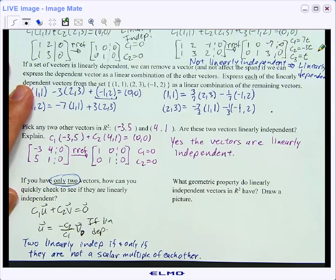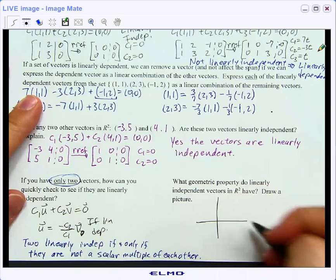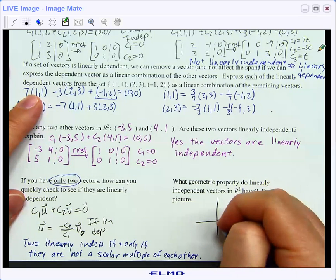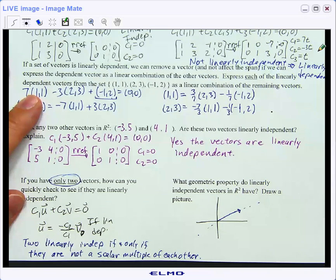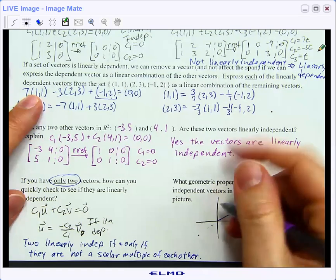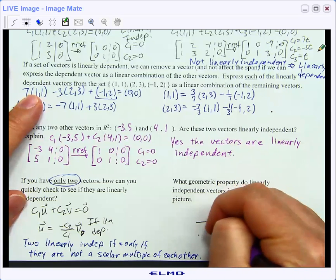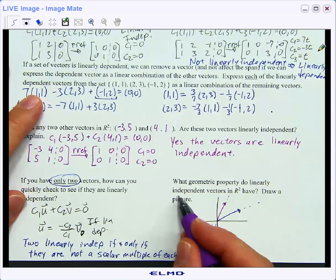As we've seen, if we have some vectors in R², for those that are linearly independent, they can't be multiples of each other. Therefore, what that would mean is the two vectors cannot lie on the same line for them to be linearly independent.